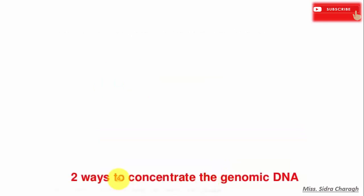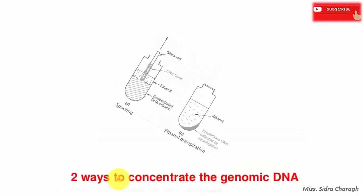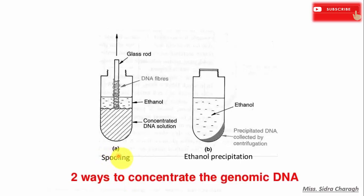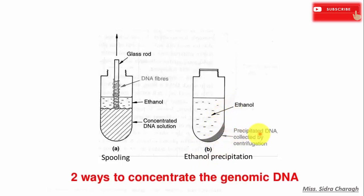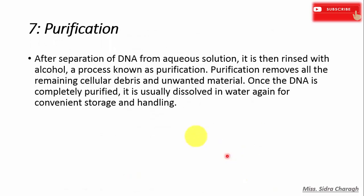Normally two different ways are used to concentrate the genomic DNA. The first is spooling the genomic DNA: we add ethanol to the concentrated DNA solution, and DNA fibers attach to a glass rod which we then remove. The other method is ethanol precipitation, where ethanol precipitates the DNA, which is then collected by centrifugation.